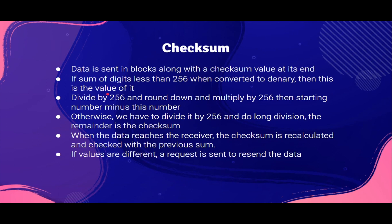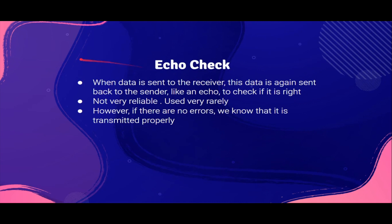We might even be asked to calculate the checksum. So if a sum of digits is less than 256 when converted to binary, then that is the value of it. But if it is higher than 256, you have to divide it by 256 in long division, and then the remainder is the checksum. This is basically a shortcut for the very big method given in the book. Echo check is when the data sent to the receiver is sent back to the sender like an echo. This is not very reliable and is used very rarely, but if there are no errors, we know the data has been transmitted properly.